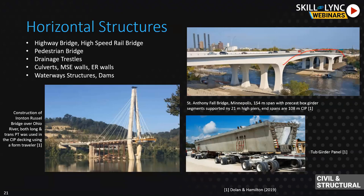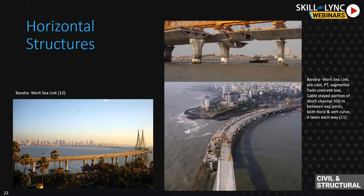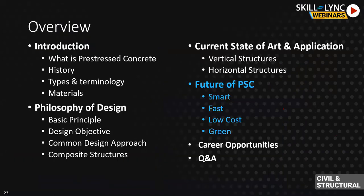For horizontal structures, prestressed concrete is used very frequently in bridges because of the large tension demands. You can see the size of the girders being transported with the prestressed strands right there. Applications include highway bridges, pedestrian bridges, drainage trestles, culverts, mechanically stabilized earth walls, retaining walls, waterway structures, and dams. The Bandra Worli Sea Link in India used both pre-tensioned precast segments built segmentally and post-tensioning to tie them together, with a span of around 350 meters on the Worli channel cable-stayed portion.